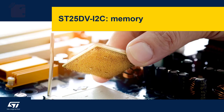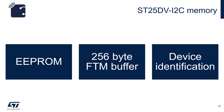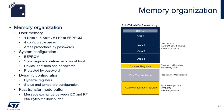Now let's look at the SD25DV memory. There are three main parts: the EEPROM, the 256-byte fast transfer mode buffer, and device identification. The SD25DV memory is organized into four main sections.